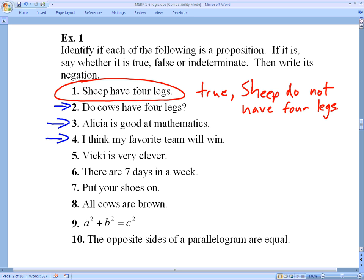This one's interesting. I think my favorite team will win. Is it a statement? Yes. It's not the winning that is the statement part of it. It's the thinking. I am thinking that my favorite team will win. And so the negation of that is I do not think my favorite team will not win. That would be the negation. Again, the verb that we have here is think. And that's what you need to negate.